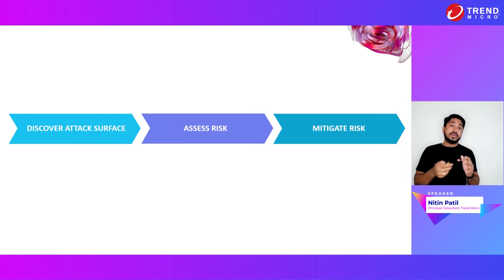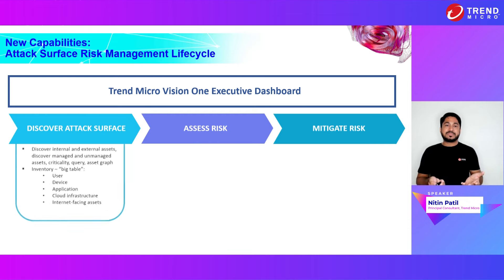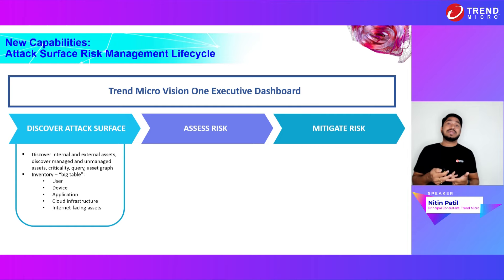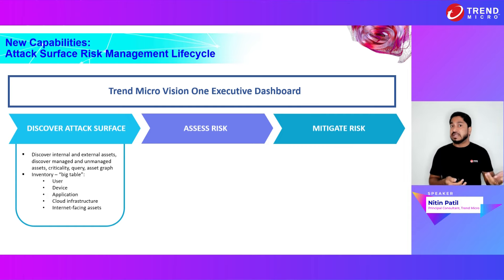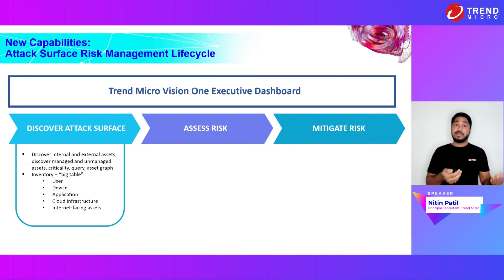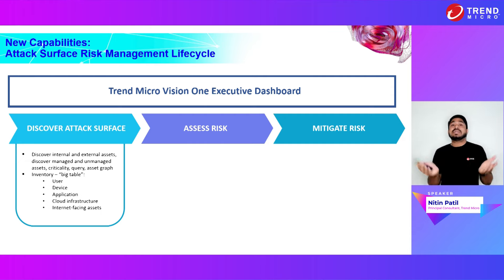When we talk about doing a risk management lifecycle in three phases and building an executive dashboard, the first phase is discovery. You should know what your assets are — it doesn't matter if they are internal or external, managed or unmanaged. It can be a user, an application, a cloud asset, a device, internal or external. You create that full inventory of all your assets.